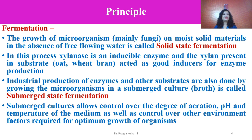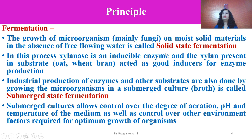Here we are using the fungal enzyme. Industrial production of enzyme and other metabolites are also done by growing the microorganism in a submerged culture or broth culture — this is called submerged state fermentation. In submerged cultures, the cultures are allowed to grow under controlled conditions where the degree of aeration, pH, temperature, and other environmental conditions are controlled to achieve optimum growth. So we have two methods of fermentation: solid state fermentation based on solid materials without free-flowing water, and submerged fermentation in which the substrate is present in broth culture under optimized conditions.